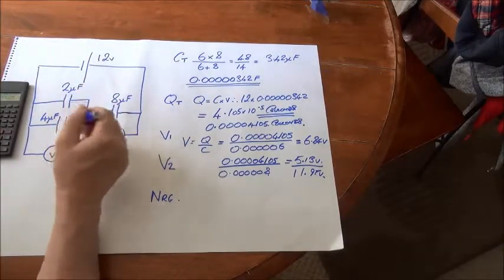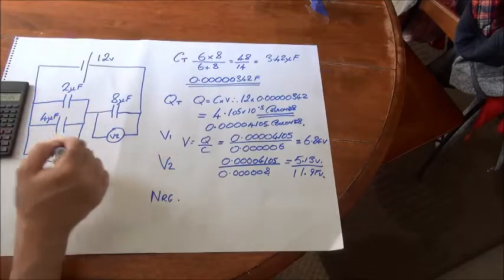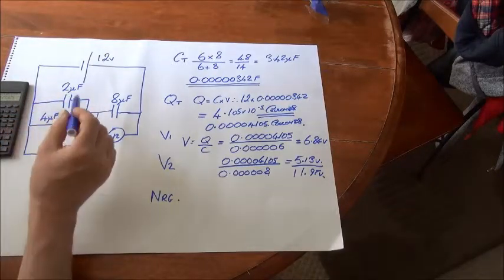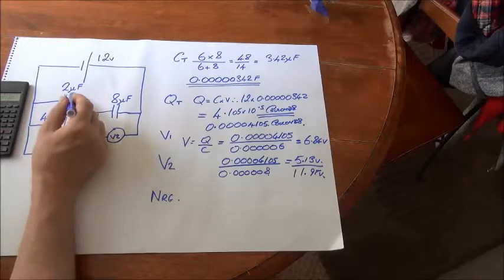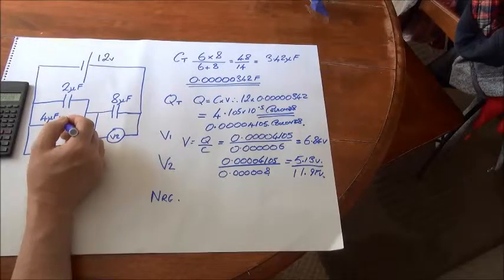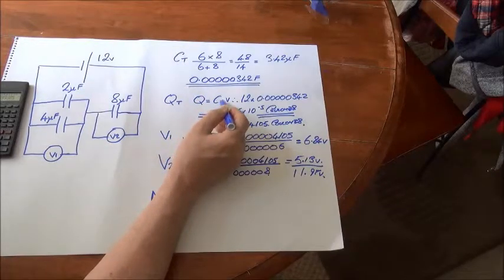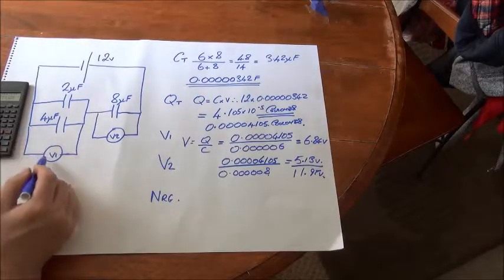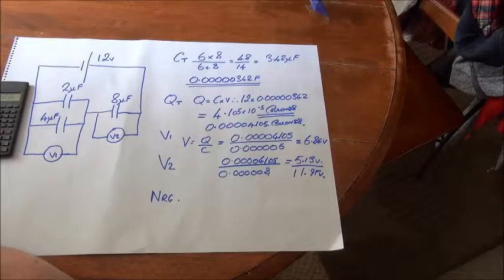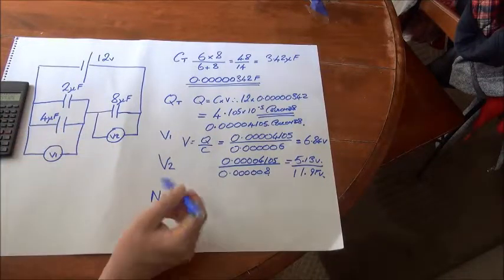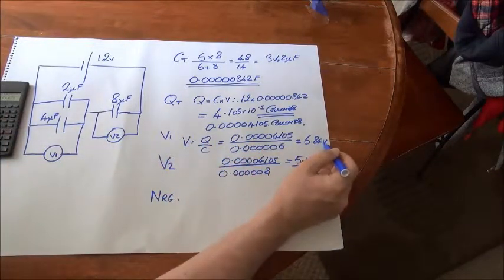Now that we know the volt drop across these capacitors, we could work out the charge for each capacitor simply by once again rearranging Q equals C times V. So we take each capacitance in turn and multiply it by the applied voltage, which is obviously V1, 6.84.